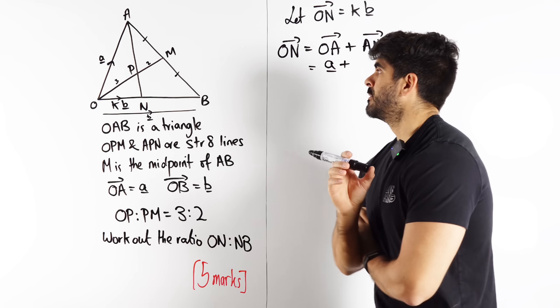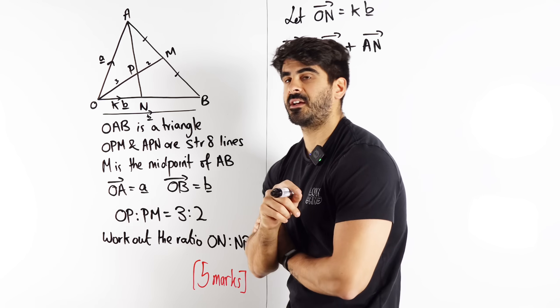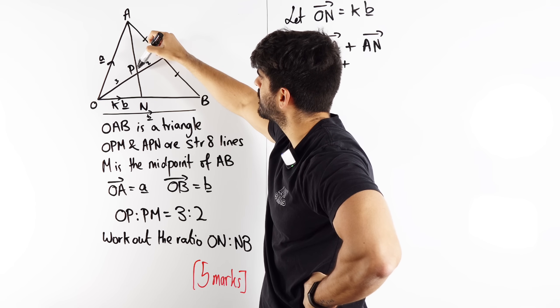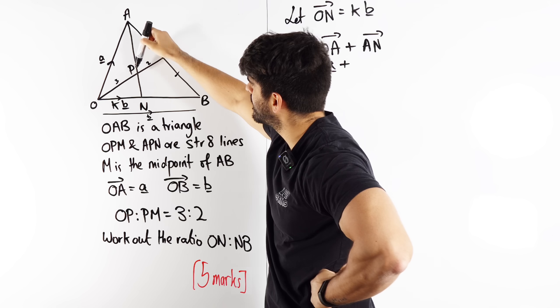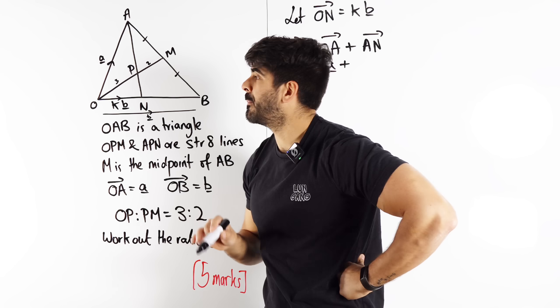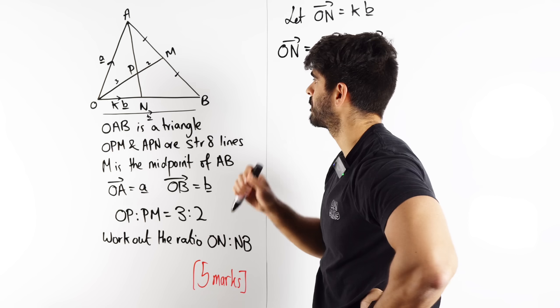Well, they did say in the question that APN is a straight line. Meaning, if I work out A to P and then extend that, make it longer, it will take me to N. But we do not know what that extension is.